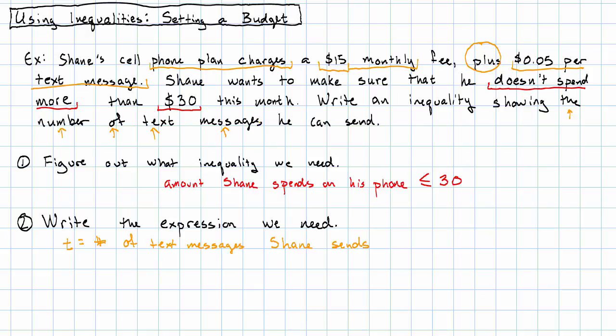It looks like that, then, $0.05 per text message is going to be a rate of change with a starting amount of $15. So, the amount Shane spends is, he starts with $15, and then adds $0.05 for every text message.